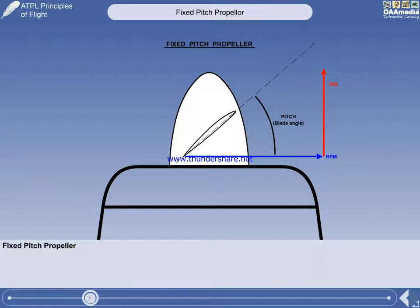We have now added a speed vector that represents the true airspeed of the aircraft. The product of the propeller RPM and the aircraft true airspeed is the relative airflow. As with any aerofoil, the angle between the chord line of the blade and the relative airflow is the angle of attack. In this case, the blade angle of attack.